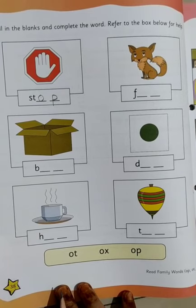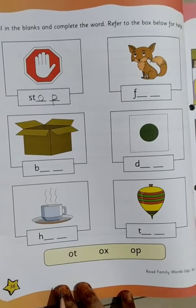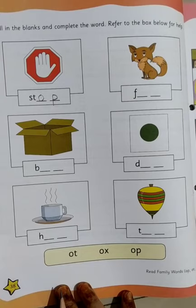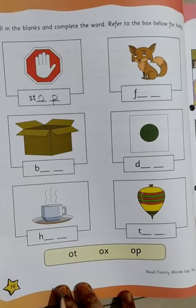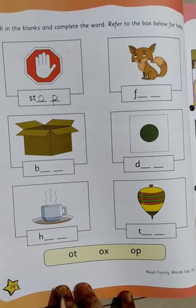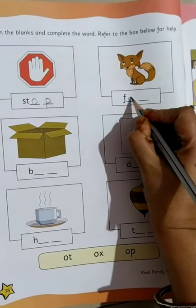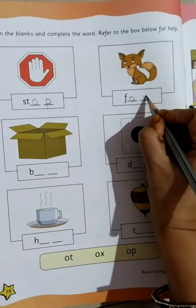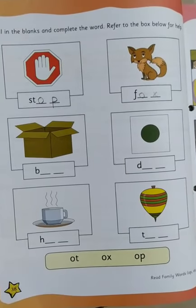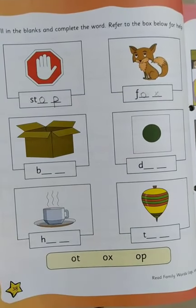Moving on to the next one. It is an animal and its name starts with F. Which animal is this? A fox. So let's write it. F is written. Now we will write ox. O and X. Fox.